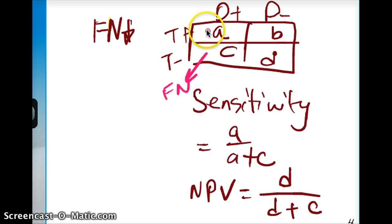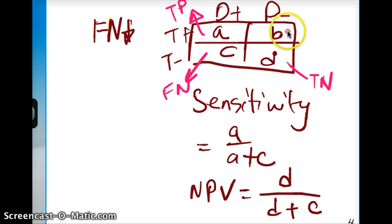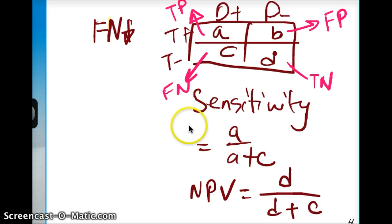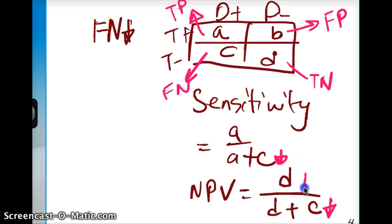By the way, if C is our false negative, then A is our true positive, D is our true negative, and B is our false positive. Mathematically, it makes sense that either sensitivity or negative predictive value is going to be affected, because if C goes down in both equations, the top value becomes bigger. As a result, sensitivity is going to be bigger and negative predictive value is also going to be bigger.